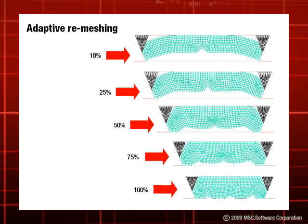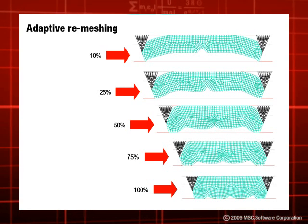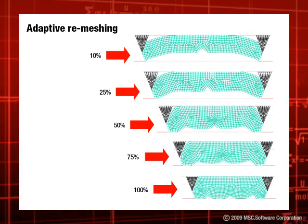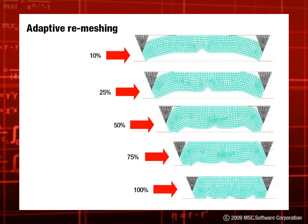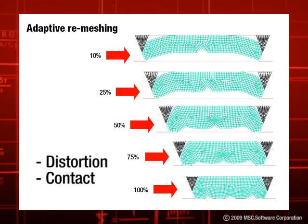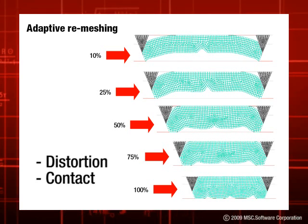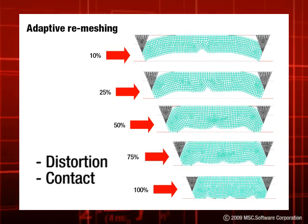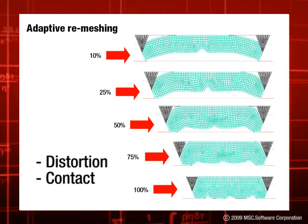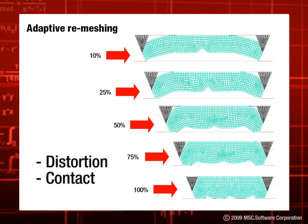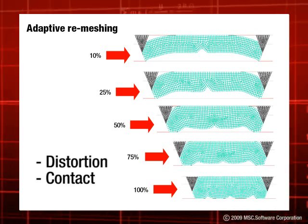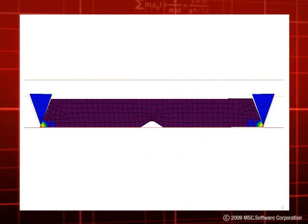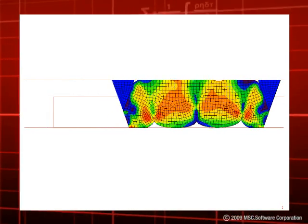MARC provides automatic remeshing capability to accommodate this large deformation without loss of accuracy. Based on pre-specified criteria like distortion and contact, MARC creates a new mesh with well-shaped elements over the previously distorted mesh. The state of the prior mesh is also transferred to this new mesh, thereby ensuring equilibrium. This process helps solve difficult problems where extreme deformation could lead to analysis failure.